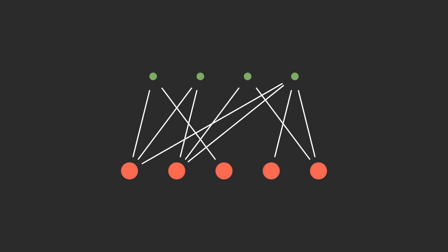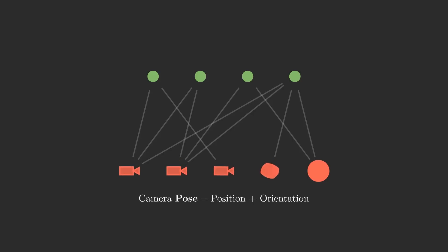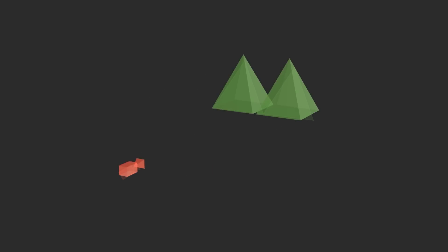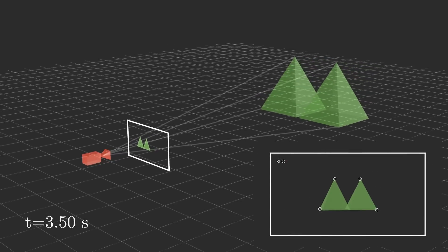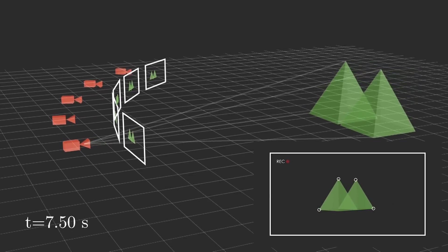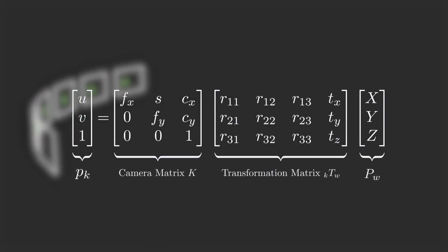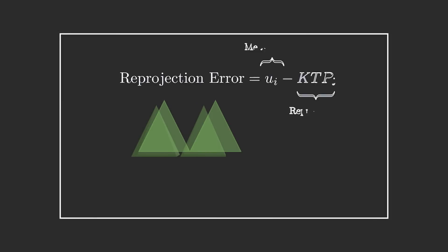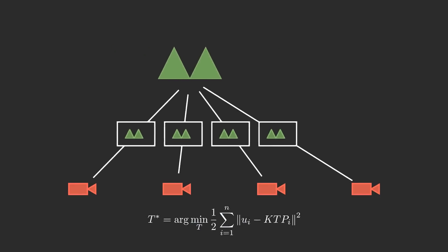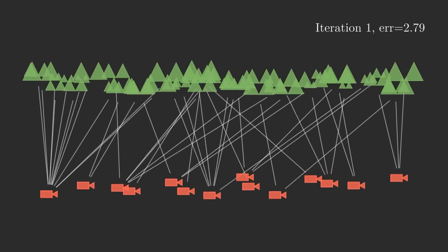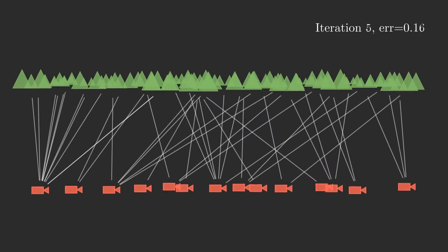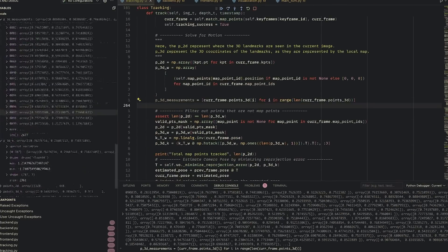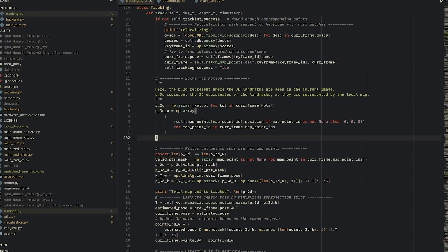The idea is to model SLAM as a graph problem, where vertices represent the unknowns — our camera poses across time and the 3D landmarks — and edges represent our actual measurements of where features appear in 2D from the camera's perspective. Because we track features across multiple frames, the same landmark can be observed across multiple camera poses. For each pose, we can calculate where the landmark should appear on the image. The error between where we think it should be and where we observe it is called the reprojection error. Graph optimization shifts around these vertices to find a global configuration that minimizes these errors. I use the G2O library, which is very popular in the SLAM world — just set up your vertices and edges and G2O optimizes the graph.